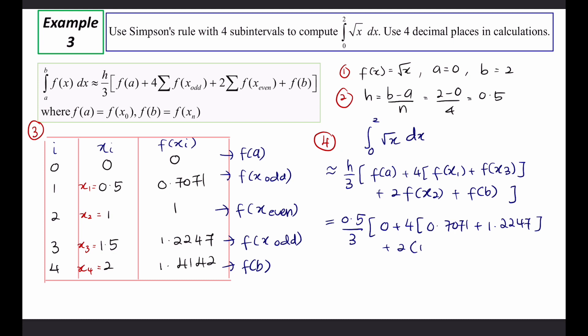Continuing the Simpson's rule calculation with h = 0.5, f(b) = 1.4142, calculating using those values, the answer is approximately 1.8569.